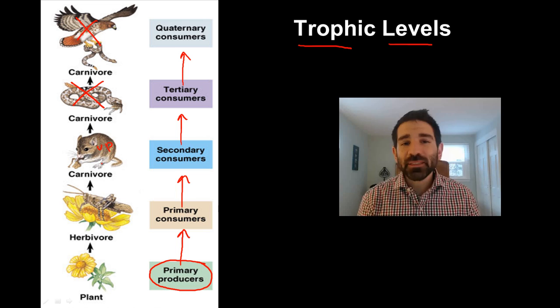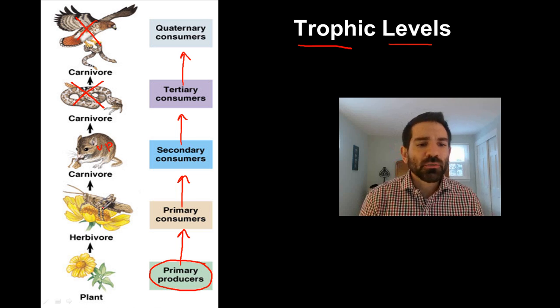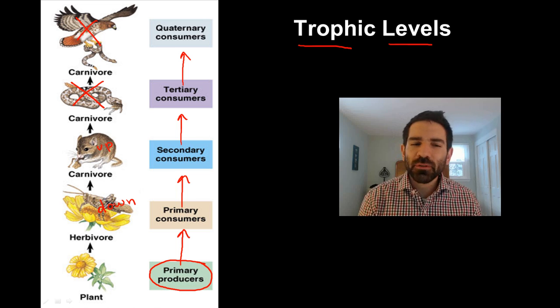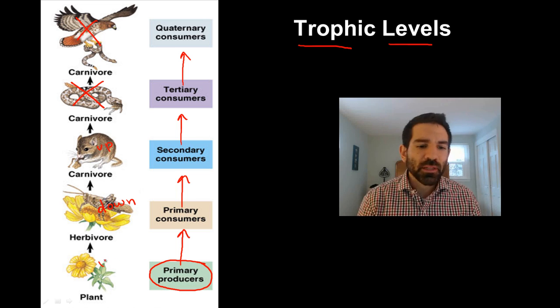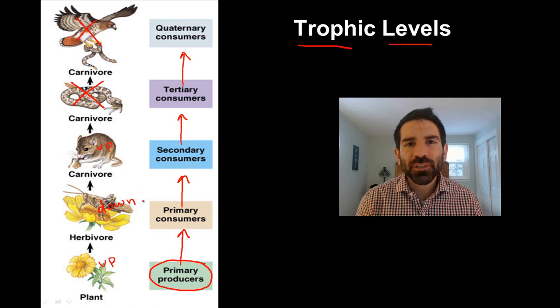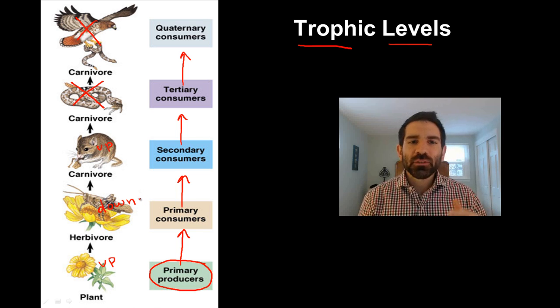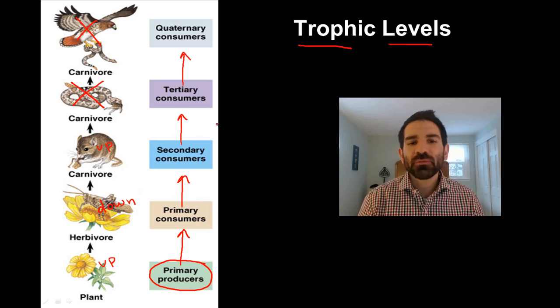Well, there's going to be more mice and they're going to be eating more. So the next level, the herbivores, they might go down. And if the herbivores go down, they're going to be eating less plants and the plants might go up. This is called a trophic cascade. It's a series of events set in motion by a change in a food chain.